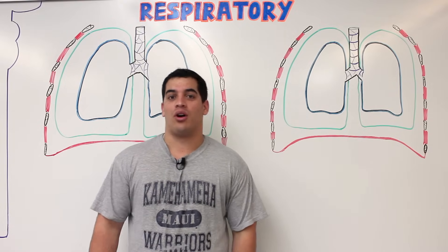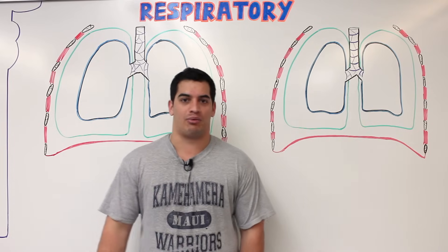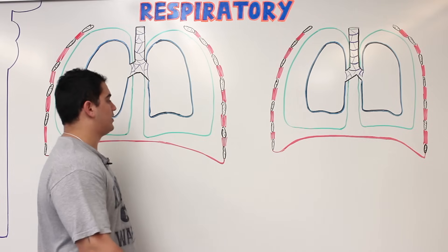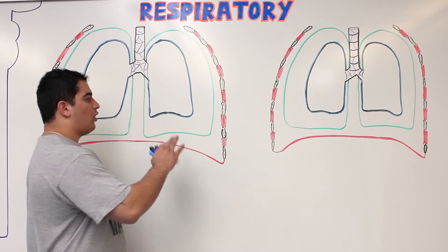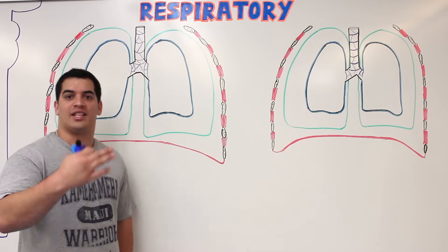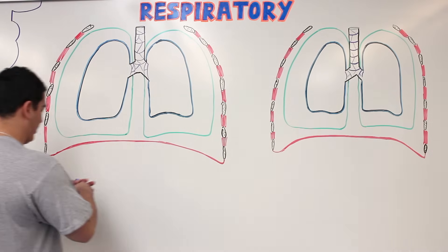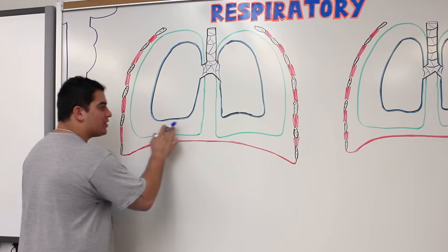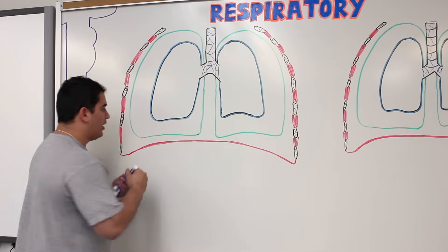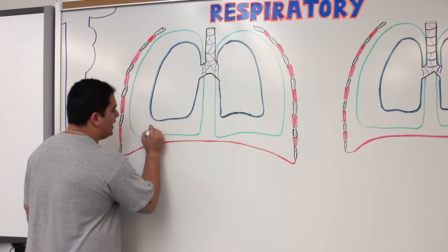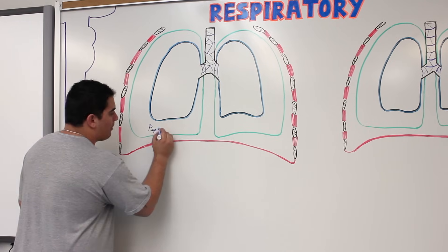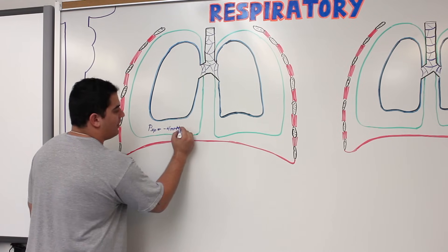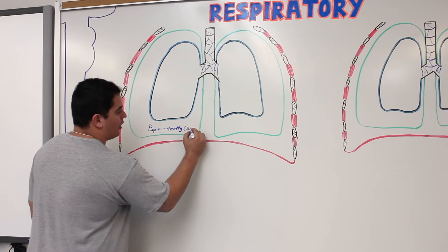Alright Ninja Nerds, in this video we're going to talk about Part 3 of the mechanics of breathing. Thanks for sticking in there with us. If you guys remember, we left off talking about what happened during the inspiration process. At the peak point of inspiration, the pressure inside the intrapleural cavity — the PIP — was negative 4 mmHg during rest, and negative 6 mmHg at peak inspiration.